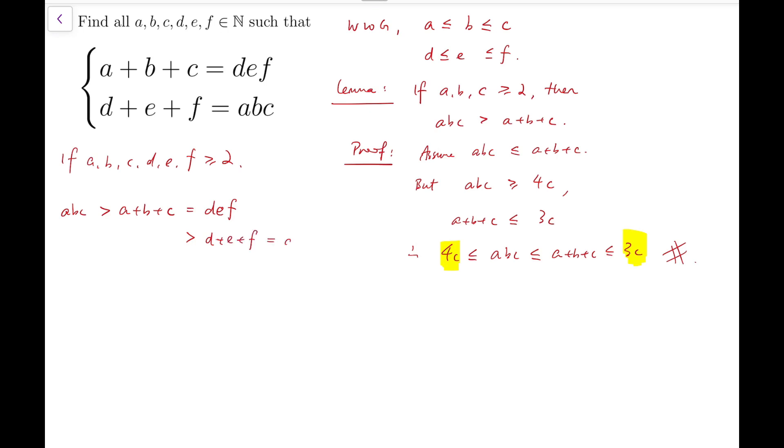And we'll go back to abc. But we have gone through two inequalities that are strict inequalities. So this statement cannot be true for any values of a, b, c, d, e, and f. So contradiction.